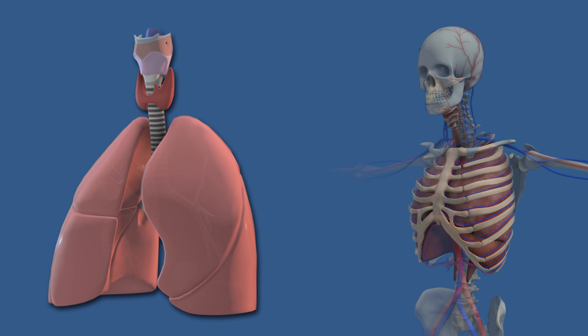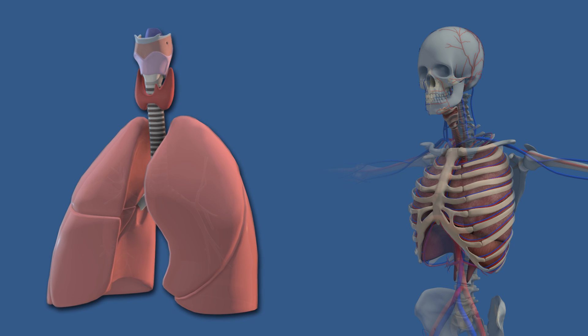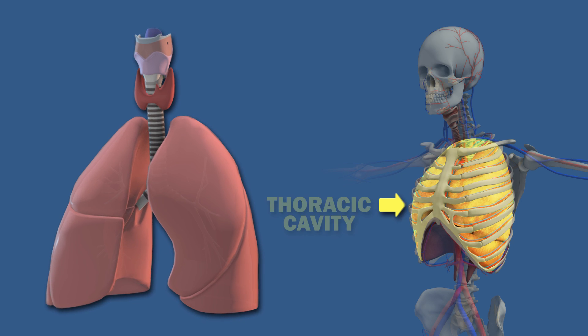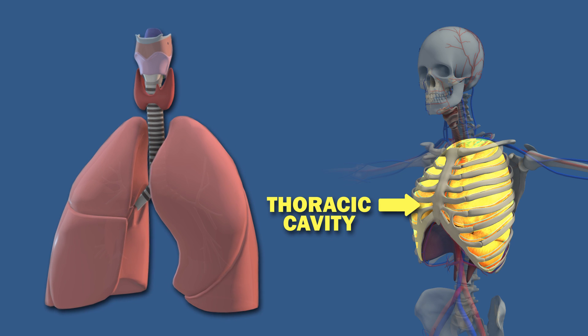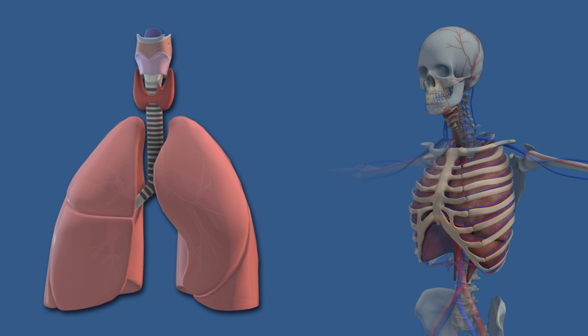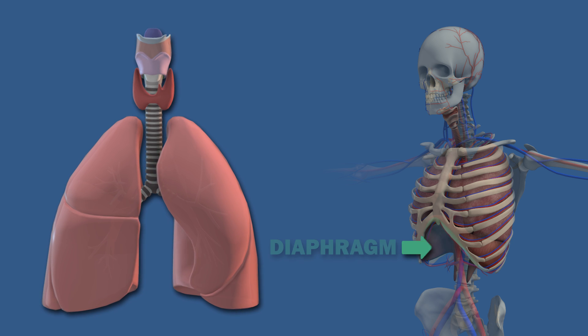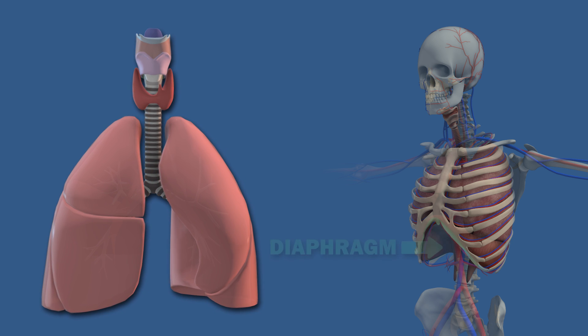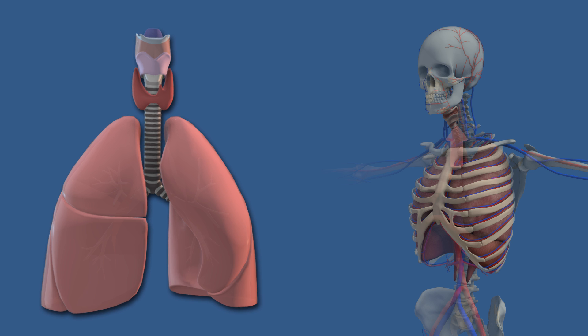The lungs are organs that allow you to breathe and are located in the thoracic cavity on either side of the heart and near the backbone. Their bases sit on the diaphragm, and their apexes extend into the root of the neck.